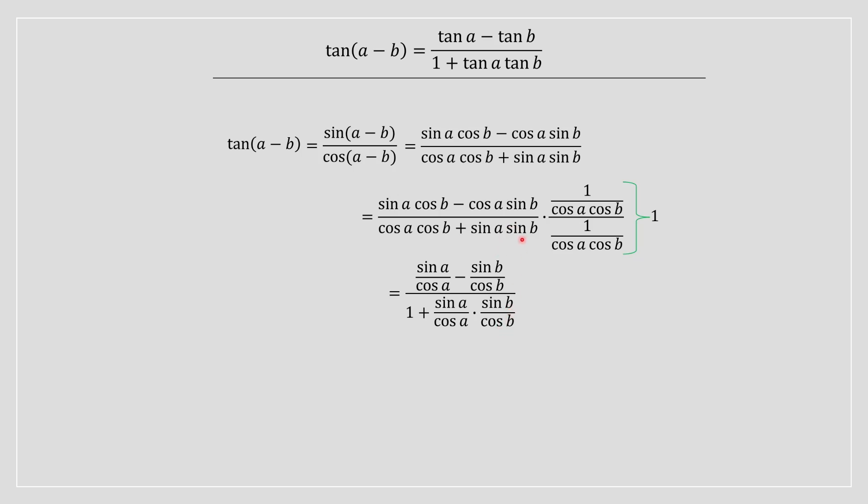And then likewise sin of b divided by cos of b for your secondary term in the denominator. We can then use the trig identity for tan and represent this as tan functions instead of sin divided by cos, and what you are going to obtain is this.